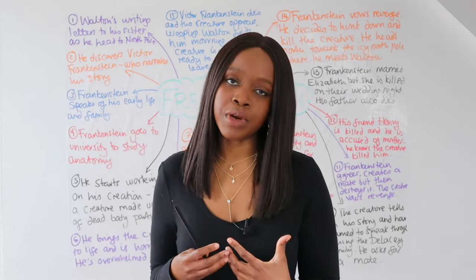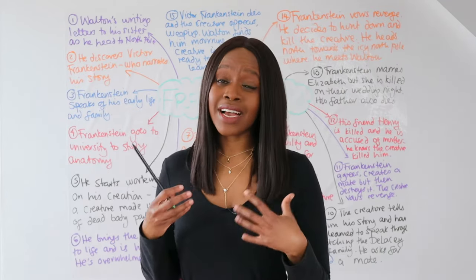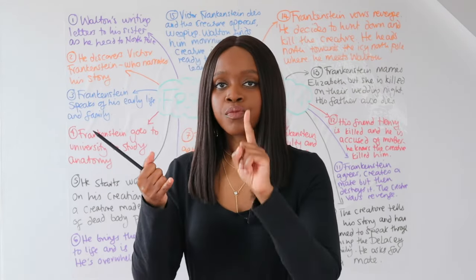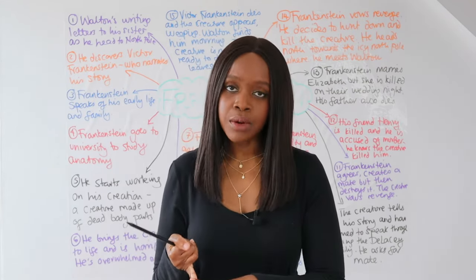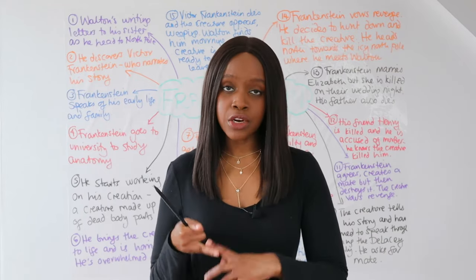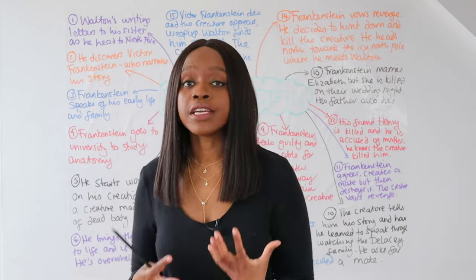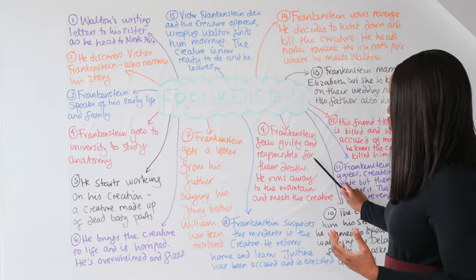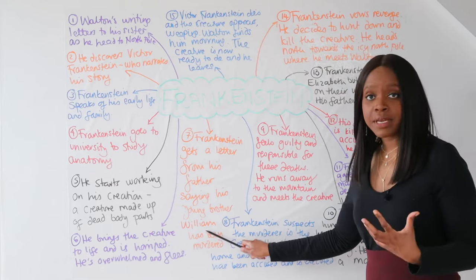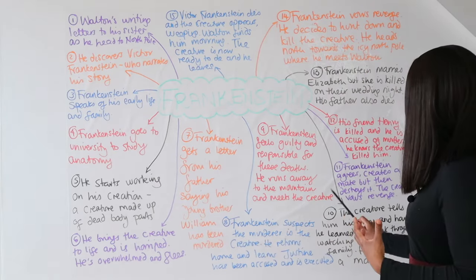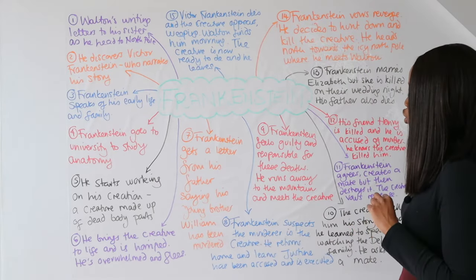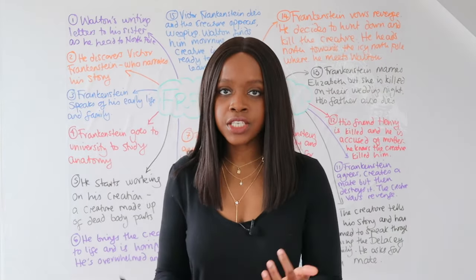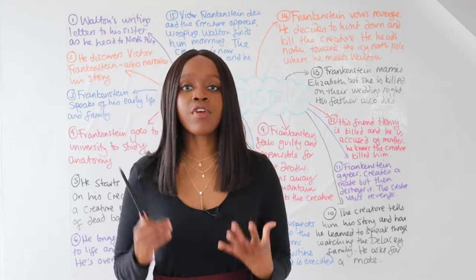Victor Frankenstein is really tortured by this knowledge because he realizes that as a result of him, he has been directly related to firstly William's murder, but also the murder of Justine, who is a really good and kind servant to them. Frankenstein feels incredibly responsible for both deaths, and he runs away to the mountains where he finally meets the creature — his creation, the child that he ran away from.